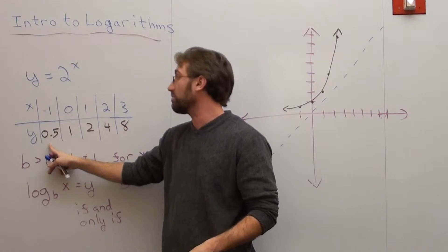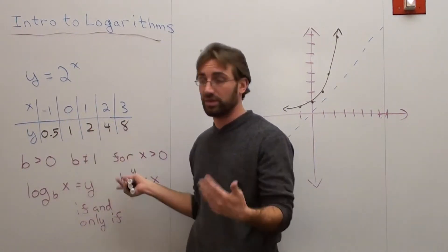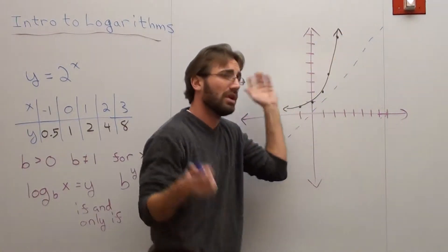And I went ahead and I made a table, negative 1, 0.5. At 0 it's 1, at 1 it's 2, at 2 it's 4, and at 3 it's 8. And I went ahead and I made a graph. That's great.